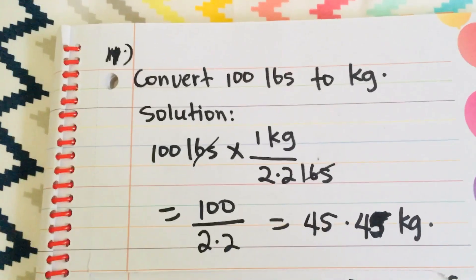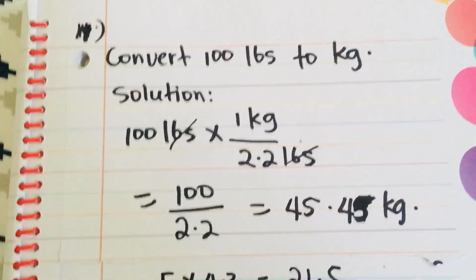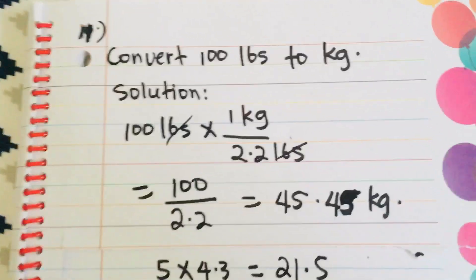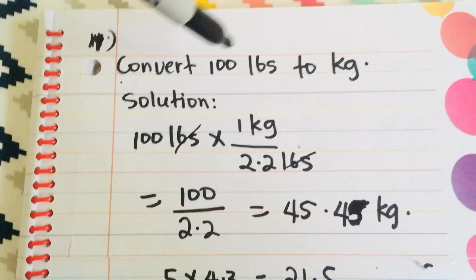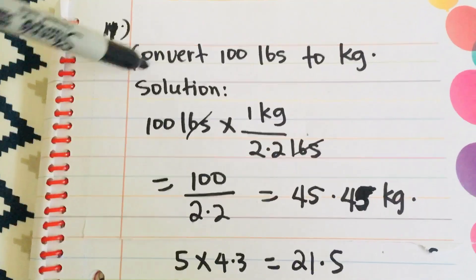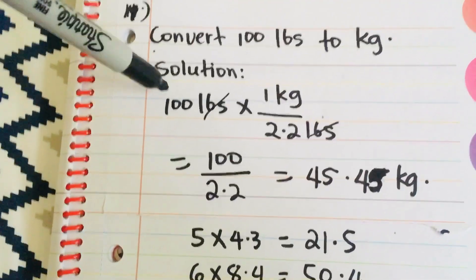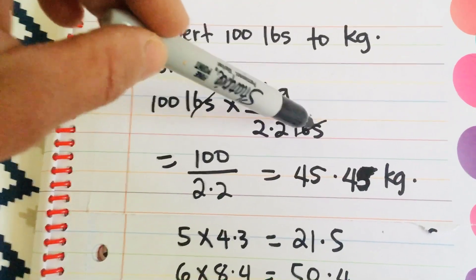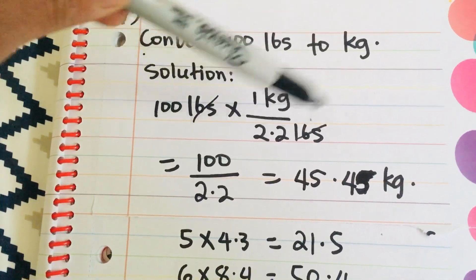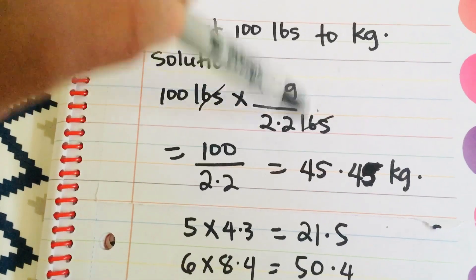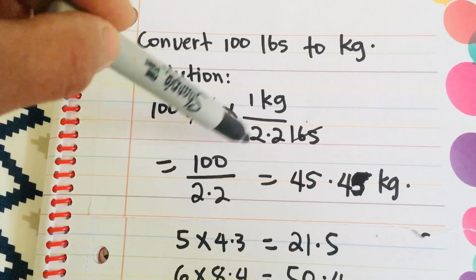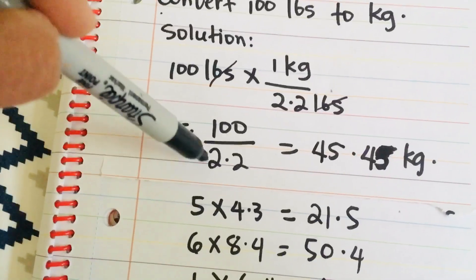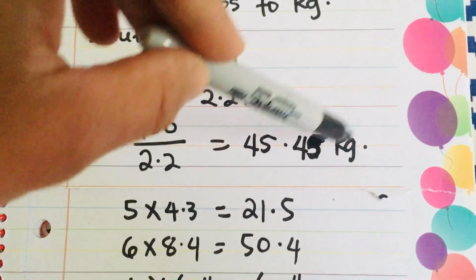So, you don't need any scientific calculator. They will provide you a basic calculator icon when you're taking the test. So, here, convert 100 pounds to kilograms. Solution. We start from the bigger number. 100 pounds times 1 kilogram over 2.2 pounds. As we know that 1 kilogram is equal to 2.2 pounds. You have to memorize this number. Or, I think sometimes they will provide this number to you or equation. So, 100 divided by 2.2 is equal to 45.45 kilograms. That is the answer.